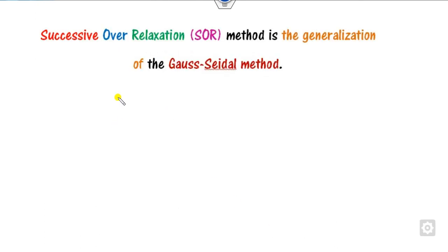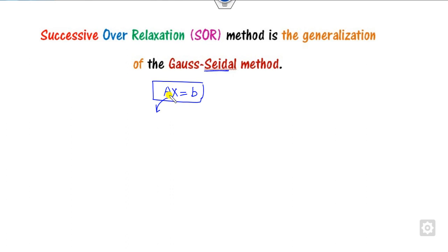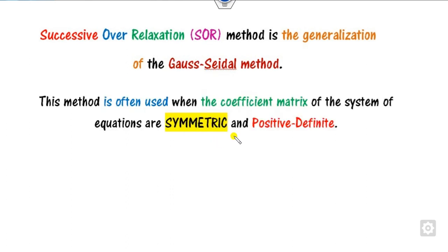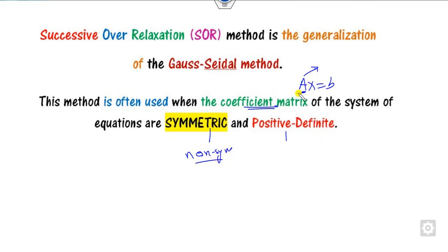What is the SOR? SOR is abbreviated as Successive Over-Relaxation, which is used for finding the solutions of the system AX=B, which is nothing but the generalization of the Gauss-Seidel method. This SOR method is applicable when the coefficient matrix A is symmetric and positive definite, but it can also work for non-symmetric matrices and other definite matrices.